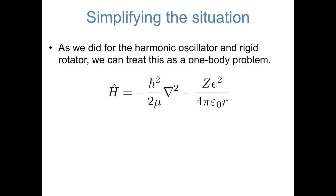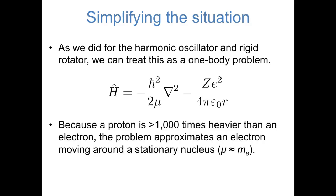There are a couple of things we can do to simplify this Hamiltonian. As we did when we considered vibrational and rotational motion of diatomic molecules, we can treat this two-particle problem as a one-body problem by considering relative motion between the particles. This leaves just one kinetic energy term where the mass is the reduced mass of the nucleus and electron together. Even in a hydrogen atom, the nucleus is more than a thousand times heavier than the electron, so the reduced mass is very close to the mass of the electron. The problem essentially boils down to a very small particle — the electron — moving around what can be thought of as an infinitely heavy and stationary nucleus.